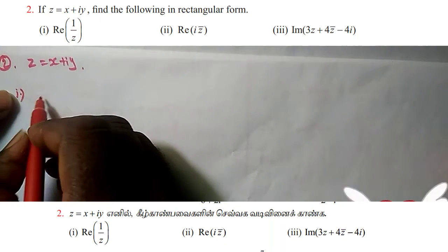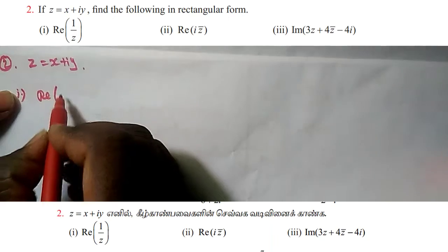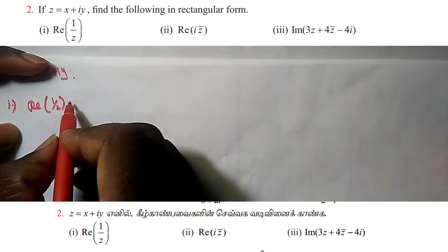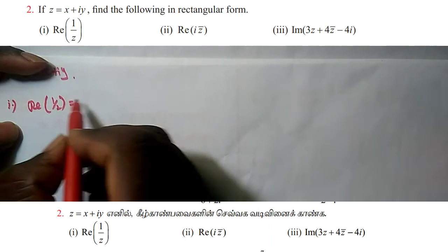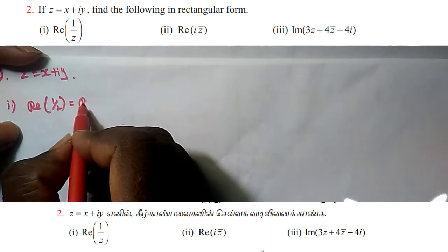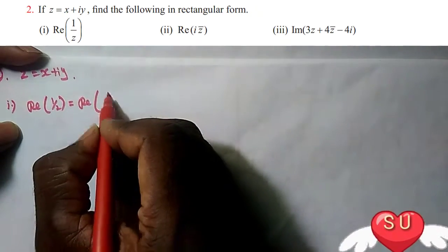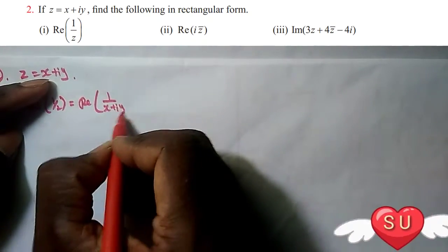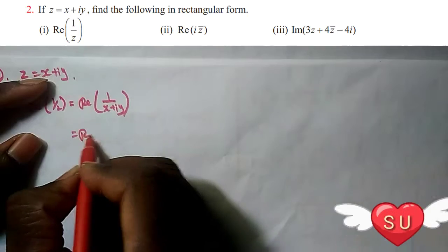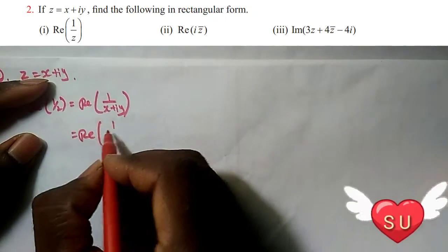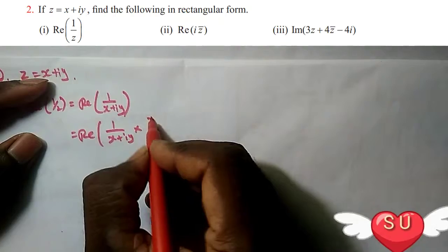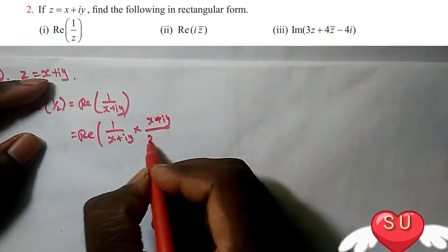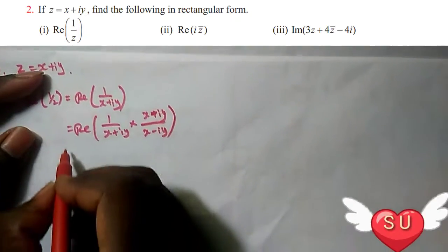So first, we are going to show the real part of 1 divided by Z. So, 1 divided by Z equals 1 divided by X plus iY. Real number: 1 divided by X plus iY, multiply by conjugate X minus iY divided by X minus iY.